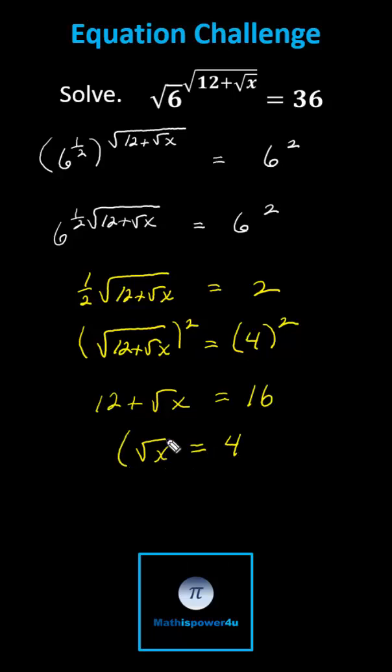To undo the square root again, we square both sides of the equation. The square of the square root of x is equal to x. We have x equals 16.